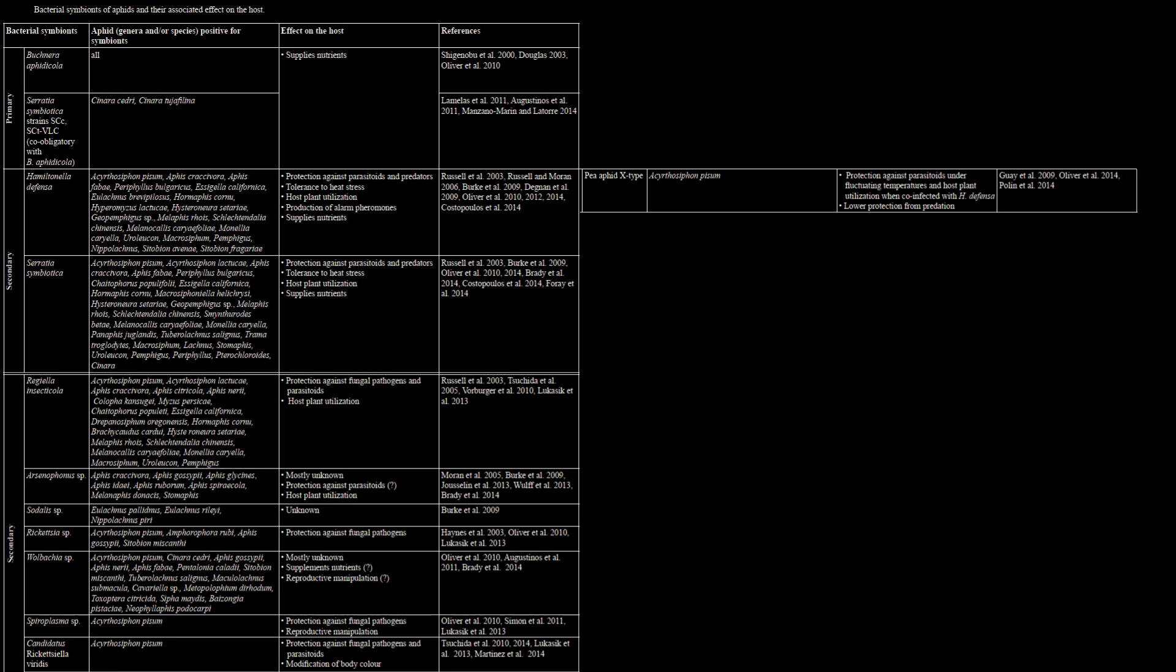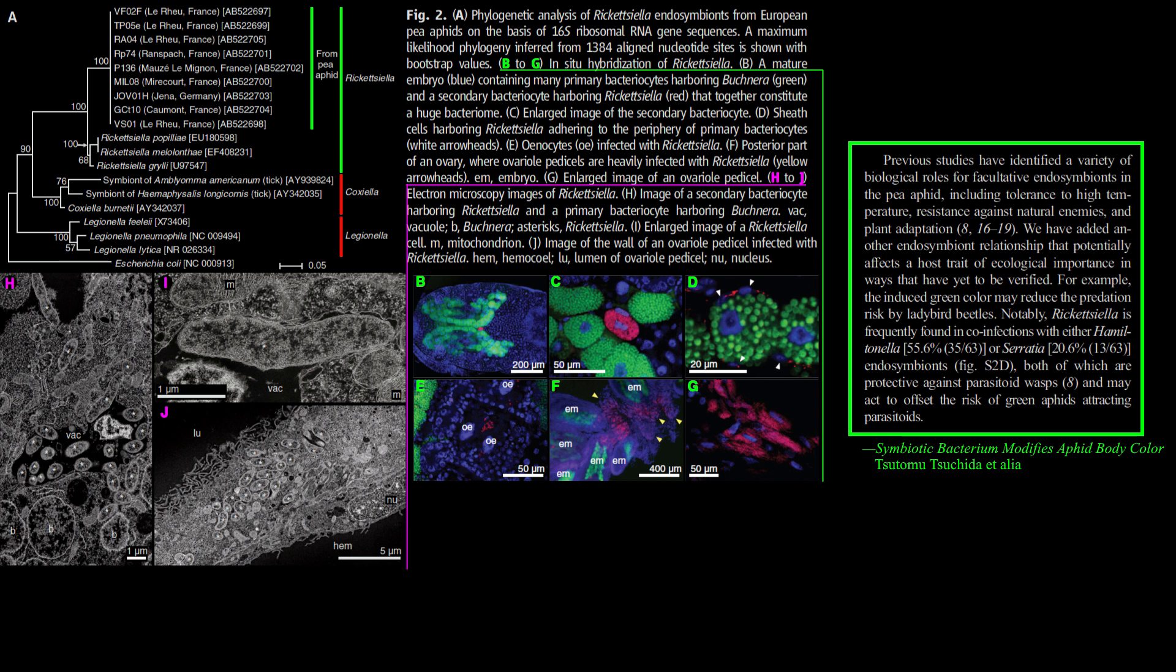Like many Hemiptera, aphids rely on endosymbionts, specifically bacteria that have formed an integral symbiotic relationship with their host through coevolution, as primary symbionts like Buchnera aphidicola, or from recent colonization as secondary symbionts like Candidatus Rickettsiella viridis, in order to, among other things, process metabolic waste such as glutamate into essential amino acids for the host to survive. These microbes reside in specialized fat cells called bacteriocytes.